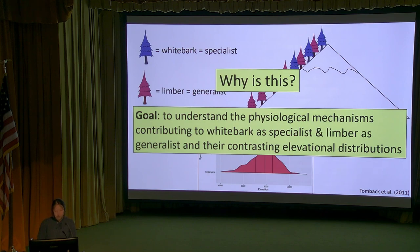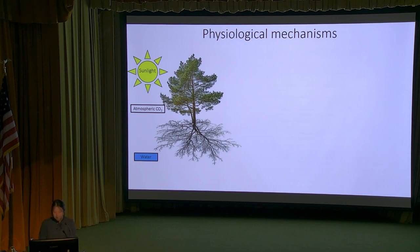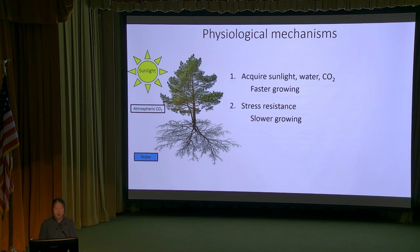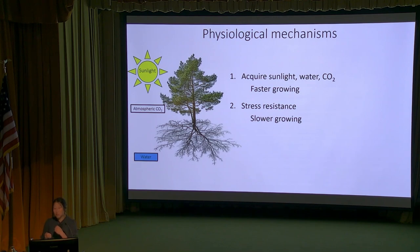When I mention physiological mechanisms, trees need sunlight, CO2, and water to do photosynthesis in their leaves, making their own sugars. Those sugars are allocated to essential functions for survival - either to faster growth or to higher stress resistance. Plants can allocate resources to acquiring sunlight, water, and CO2 for photosynthesis and faster growth, or they can allocate to slower growth and higher stress resistance. Both strategies can help a tree survive.